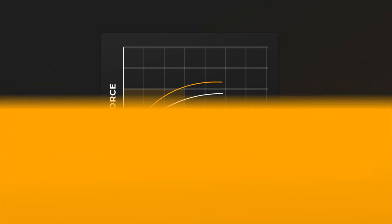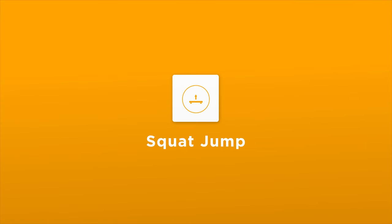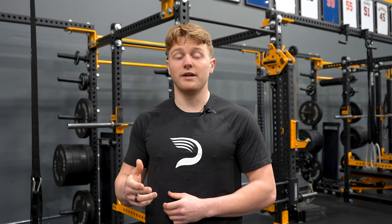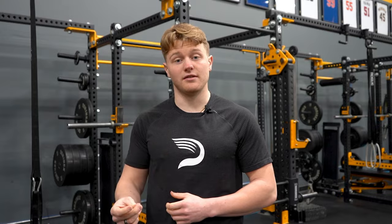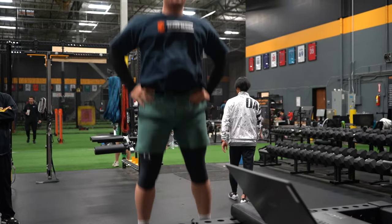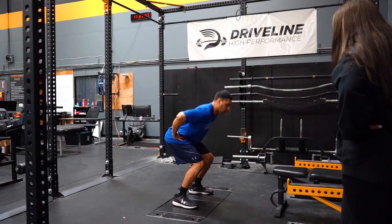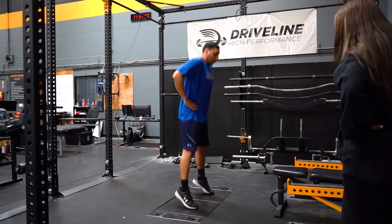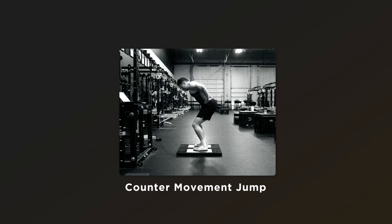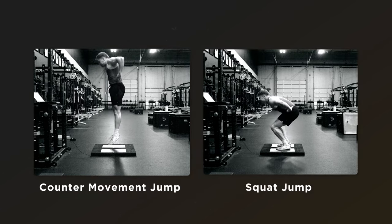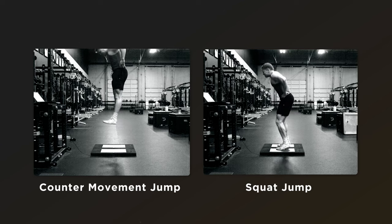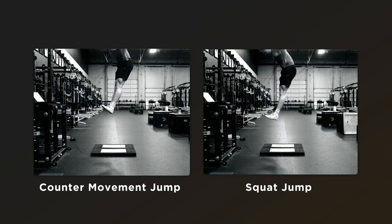The next test we'll perform is the squat jump. The squat jump is very similar to the counter movement jump in that we're trying to assess the athlete's current rate of force development, but we're doing it from a standstill. We're trying to measure the difference between how well the athlete uses the eccentric — the down portion of the jump — to create what's called the eccentric utilization ratio, which is the difference between those two.